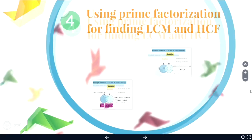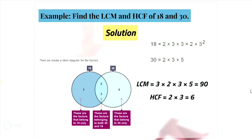We end the third question about prime numbers and prime factorization. In the last task we learn about using prime factorization for finding LCM and HCF. In the first problem, we must find the LCM and HCF of 18 and 30. Firstly, write the numbers as a product of prime factors: 18 equals 2 times 3 squared; 30 equals 2 times 3 times 5. Then you create a Venn diagram for the factors. In the first circle, place the factors that belong to 18 only. In the second circle, place the factors that belong to 30 only. In the intersection, place the factors belonging to both 30 and 18.